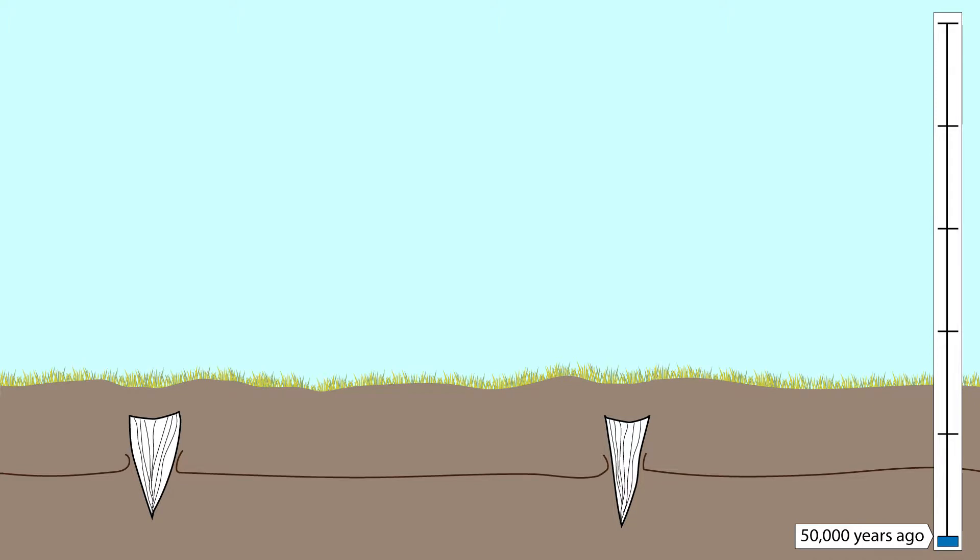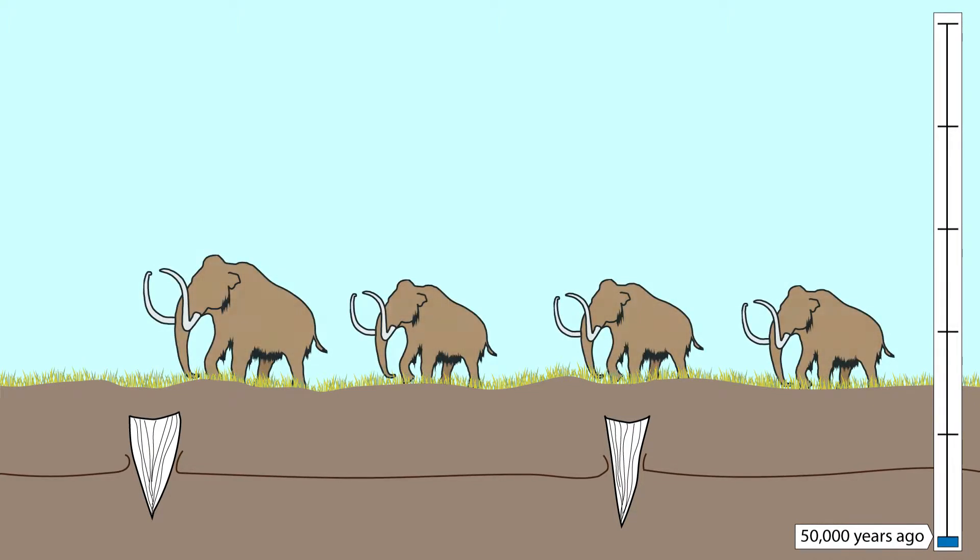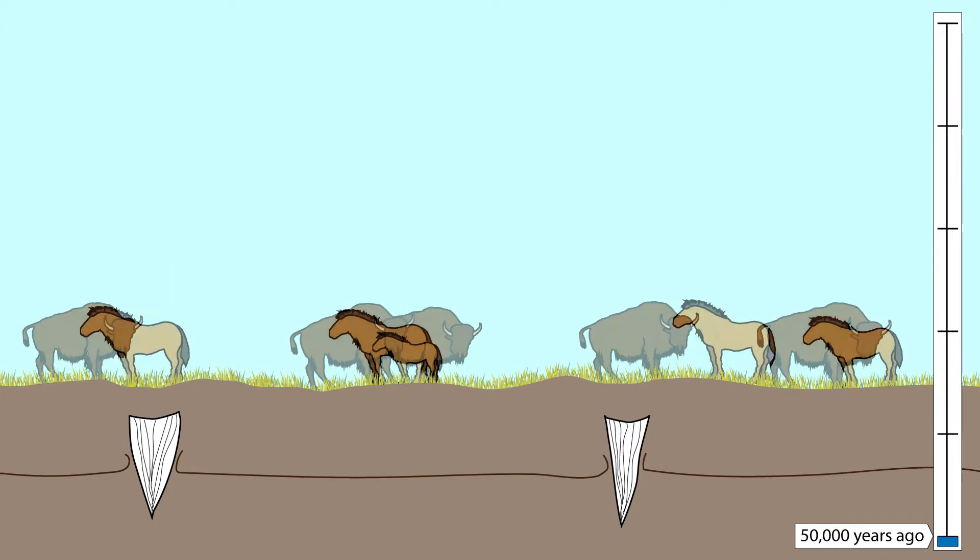The climate supported grasslands instead of forests. The grass fed several ice age mammals such as the woolly mammoth, the steppe bison, and the Pleistocene horse.